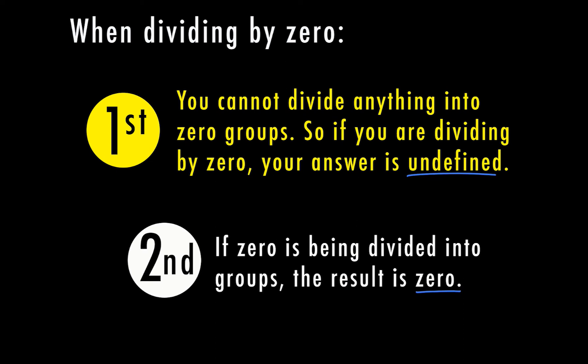If zero is in the denominator, we're dividing it into zero groups, then my answer is undefined. If zero is in the numerator, and we're dividing zero of something into groups, then my answer is actually zero.